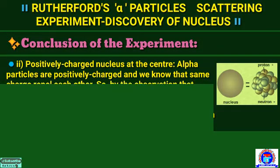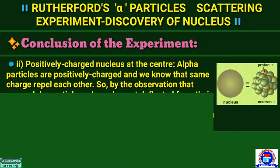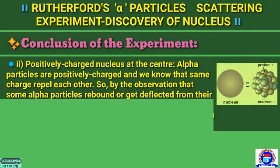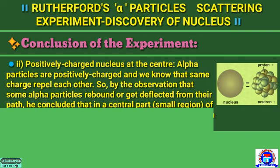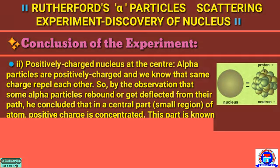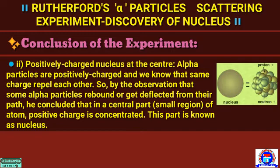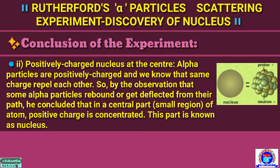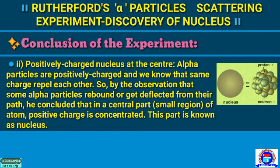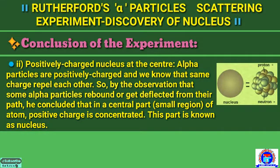Conclusion number 2: positively charged nucleus at the center. Alpha particles are positively charged, and we know that same charges repel each other. So by the observation that some alpha particles rebound or get deflected from their path, Rutherford concluded that in the central part — a small region of the atom — positive charge is concentrated. This part is known as the nucleus.